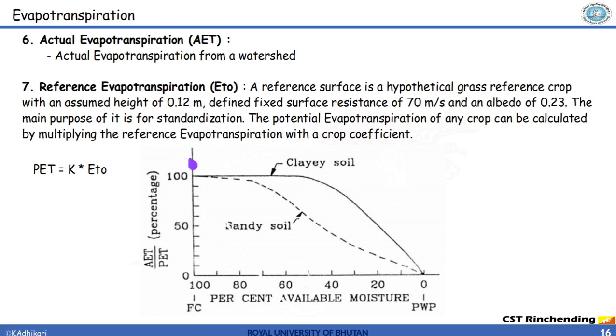Let's understand the relationship of these terms with the help of a chart. This chart is a relationship between the ratio of actual evapotranspiration to potential evapotranspiration in y-axis and available moisture in x-axis. It is developed for different soil types on the basis of experimental results.